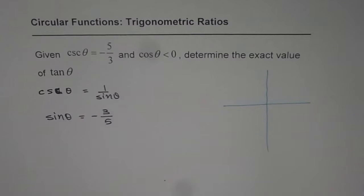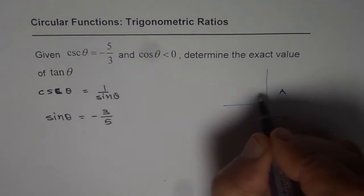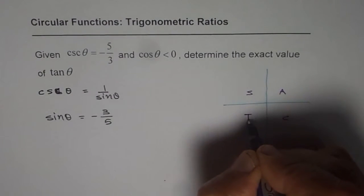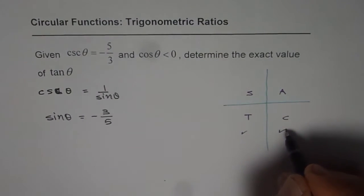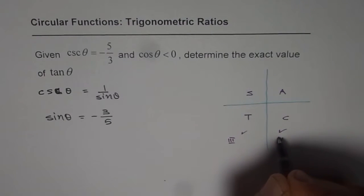Now when you say that sin theta is negative, it means using the CAST rule, we could be here or there. So that means we could be in quadrant 3 or in quadrant 4.